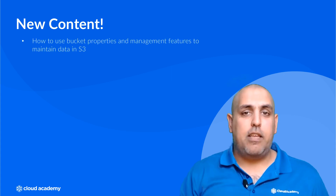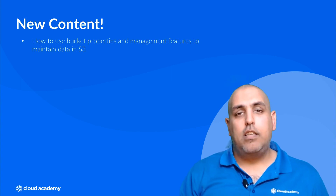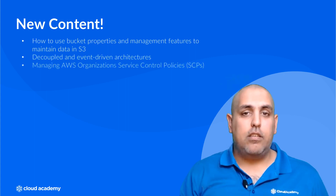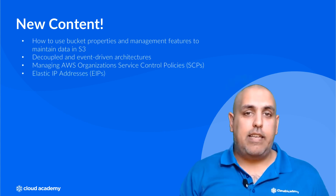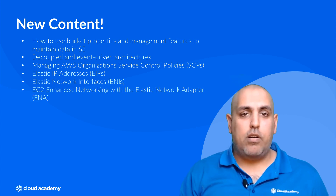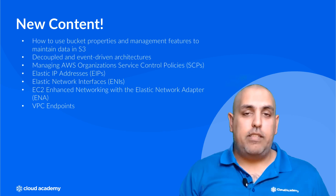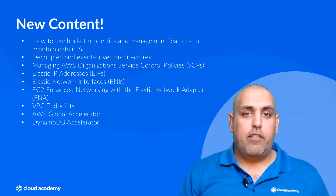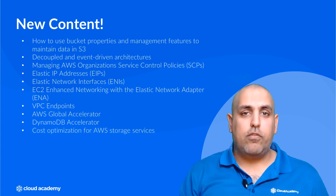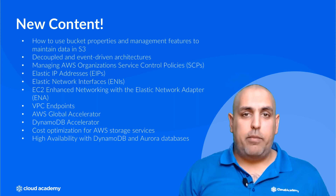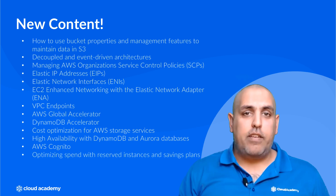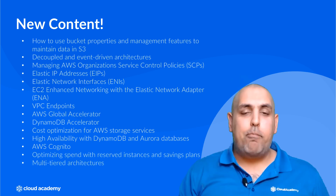How to use bucket properties and management features to maintain data in S3. Decoupled and event-driven architectures. Managing AWS Organizations Service Control Policies, SCPs. Elastic IP Addresses, Elastic Network Interfaces, EC2 Enhanced Networking with the Elastic Network Adapter, VPC Endpoints, the AWS Global Accelerator, the DynamoDB Accelerator, Cost Optimization for AWS Storage Services, High Availability with DynamoDB and Aurora Databases, AWS Cognito, Optimize and Spend with Reserved Instances and Saving Plans, and Multi-Tiered Architectures.